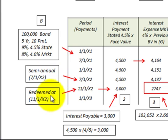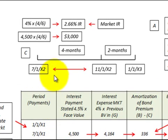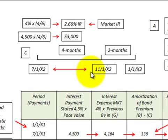The redemption date of the bond is 11.1X2, and our last semiannual payment on that bond was 7.1X2. Looking at our timeline, we have the 7.1X2 date at the beginning and 11.1X2 here, which represents four months.